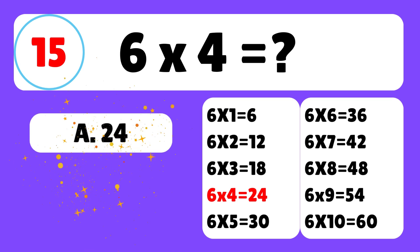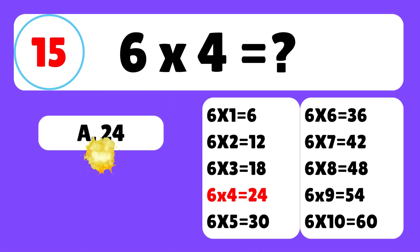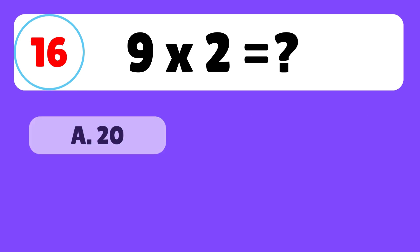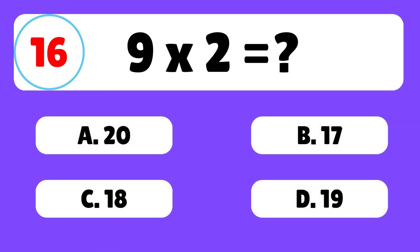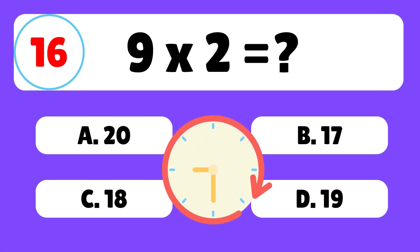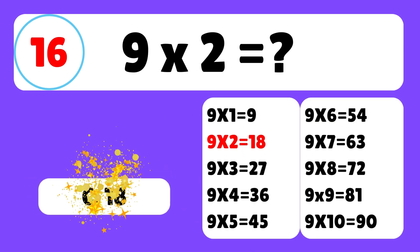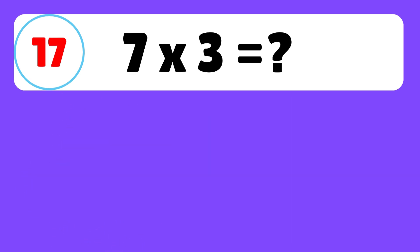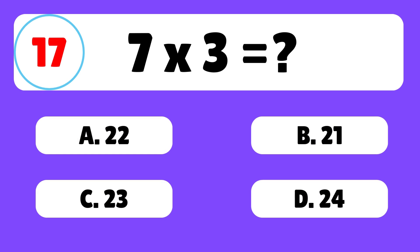Question fifteen: what is six times four? The answer is A — six times four is equal to twenty-four. Question sixteen: what is nine times two? The answer is C — nine times two is equal to eighteen.